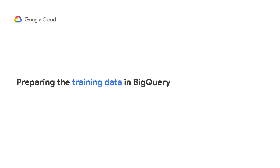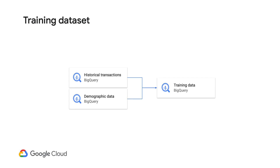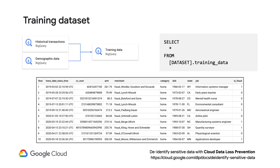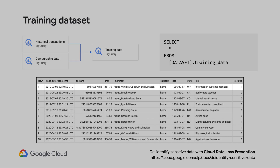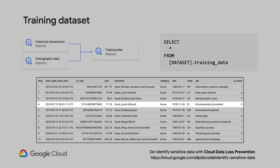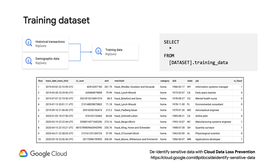Let's talk about preparing the training data in BigQuery. To detect if a transaction is fraud or not, you want to have information on the transaction and the customer's information. Normally, these historical records are in separate tables — one table for transactions and another to keep track of customer demographic information. For simplicity here, we have combined both datasets into a single table for training, where each row is a past transaction containing details of the transaction and some customer information.